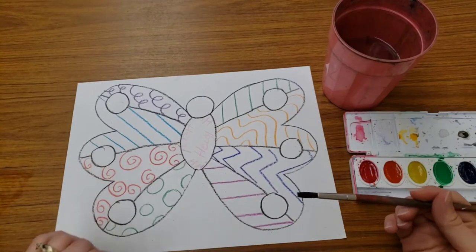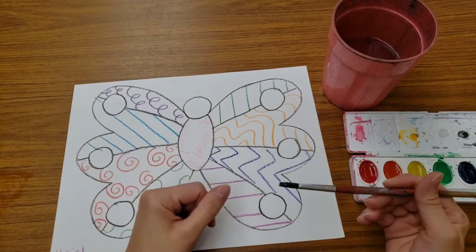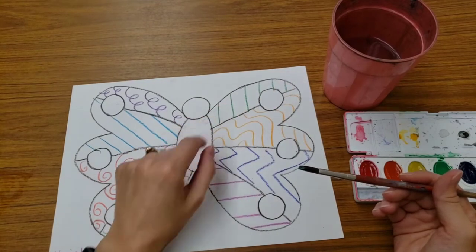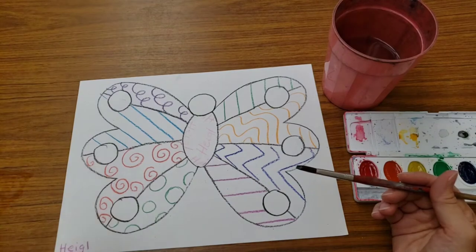And when we go to paint, you have to think about the color that's already there. I have green on my brush. Do I want to paint green in this section? Not if I'm covering up all the lines because I want things to show up.